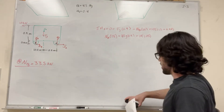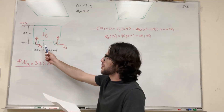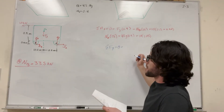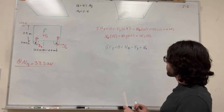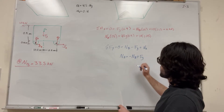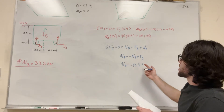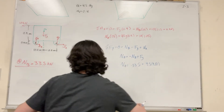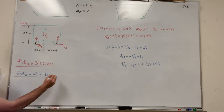Next we find Normal at A. Since we know Normal at B and force of gravity, taking sum of forces in the y direction gives one equation with one unknown. Sum of forces in y = 0: Normal_B + Normal_A − F_gravity = 0, so Normal_A = F_gravity − Normal_B = (4.5 × 9.81) − 33.5. Normal at A equals 10.7 kilonewtons.